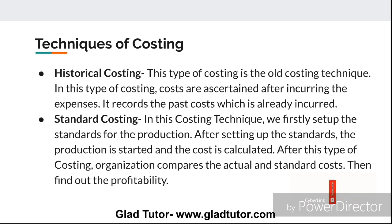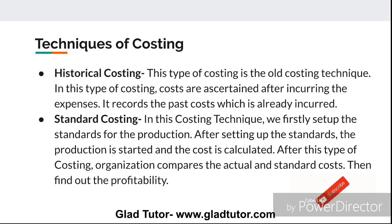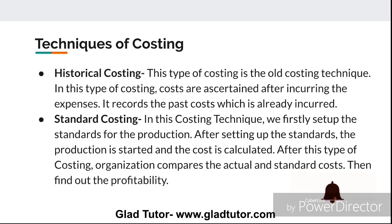The next technique of costing is standard costing. In this technique, we first set up a standard for the production. After setting the standard, production is started and the cost is calculated. Then the organization compares the actual and standard cost to find out the profitability. We fix a standard — we will not spend above this level — then implement it, start production, and check whether we are working within the standard or exceeding it.